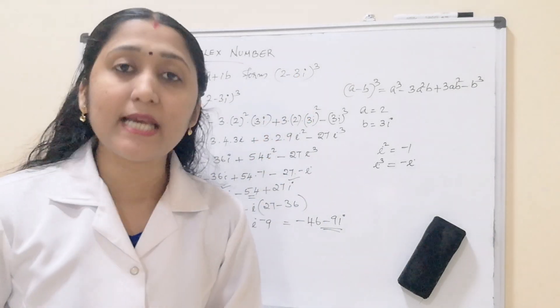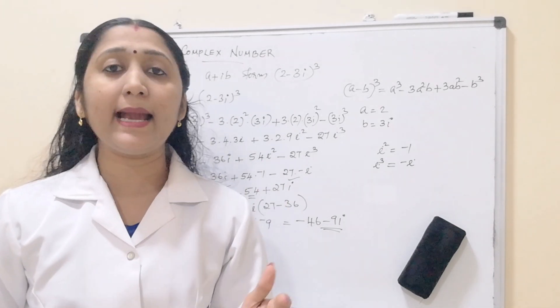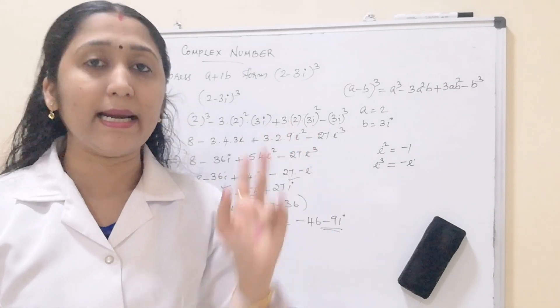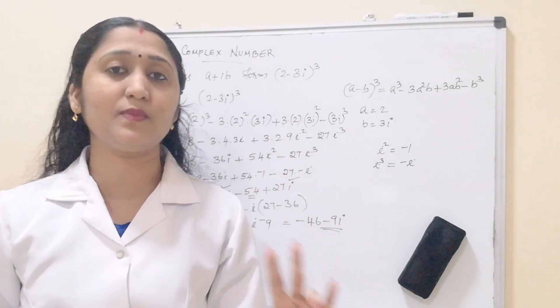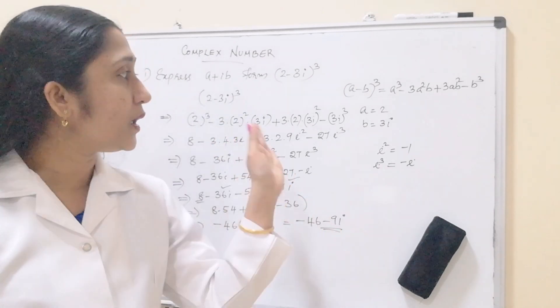So it is very easy to do. We know the identities and the powers of i. So we have to memorize the powers of i and some more identities. A plus b whole square, a minus b whole cube, a plus b whole cube. That is very much important in complex numbers.